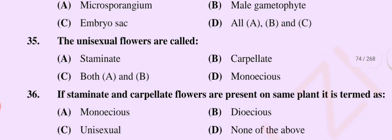Question number 35: Unisexual flowers are called — option A staminate, option B carpillate, option C both A and B, option D monoecious. The correct option is option C: both A and B.